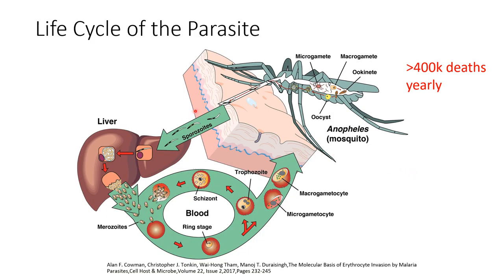This is the typical life cycle of a Plasmodium species. In a report published in 2020 from 2019 statistics, there were over 400,000 deaths caused by malaria in that year. In this life cycle, the mosquito is the vector. It transports these parasites in the form of sporozoites and they go into the liver for primary multiplication in the human host.